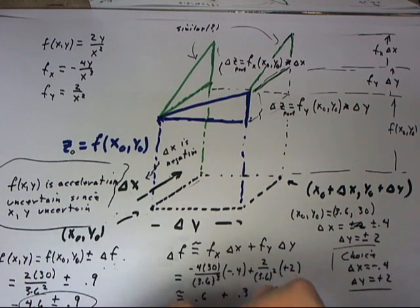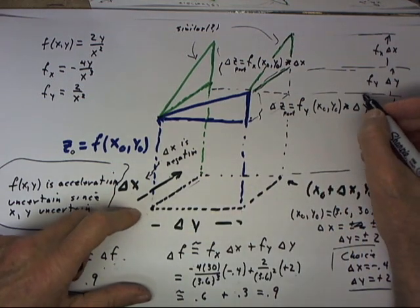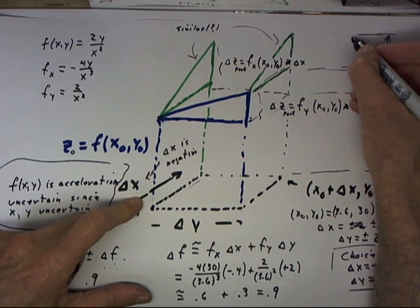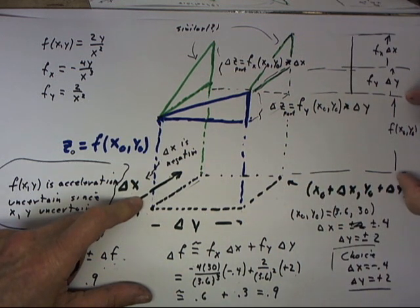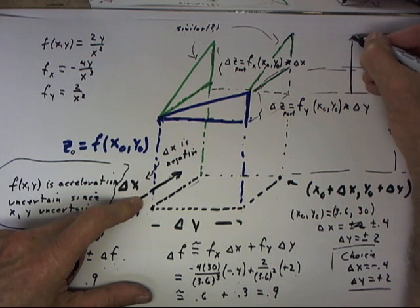Our total change in the value of z, or in the value of our function f, is from the original value f of x0, y0 to the final value f of x0, y0 plus fy delta y plus fx delta x.